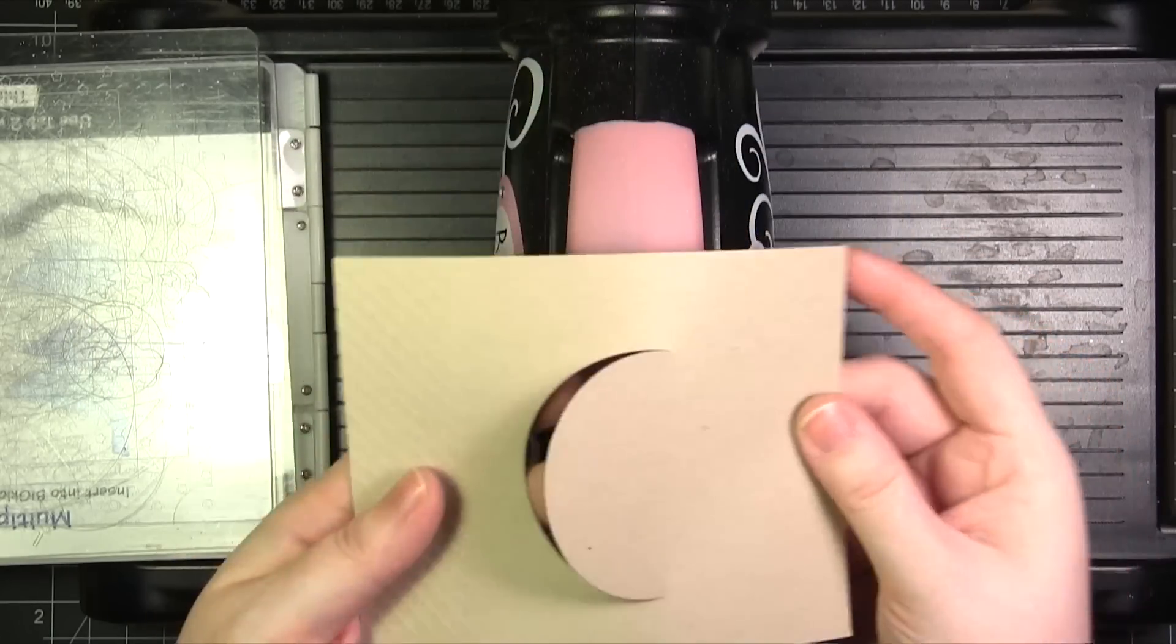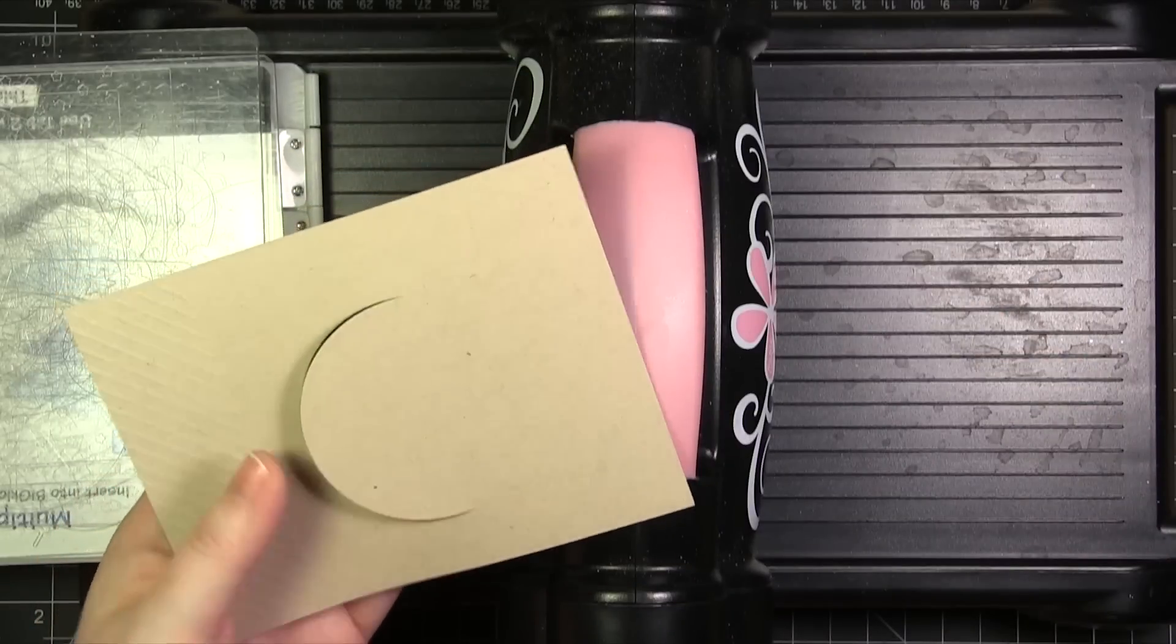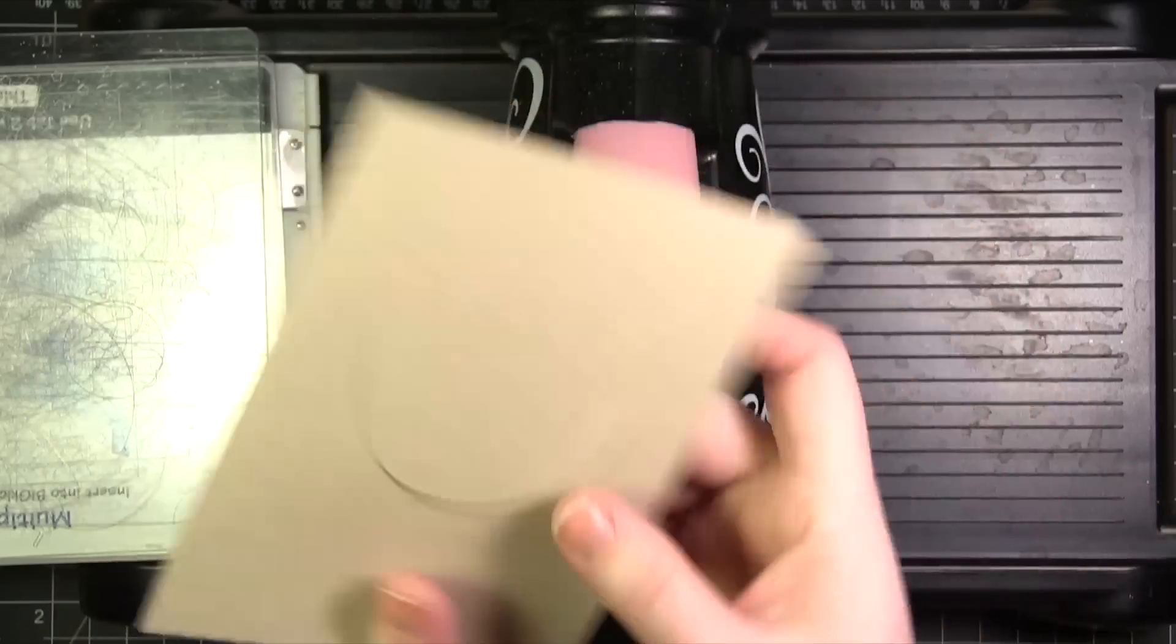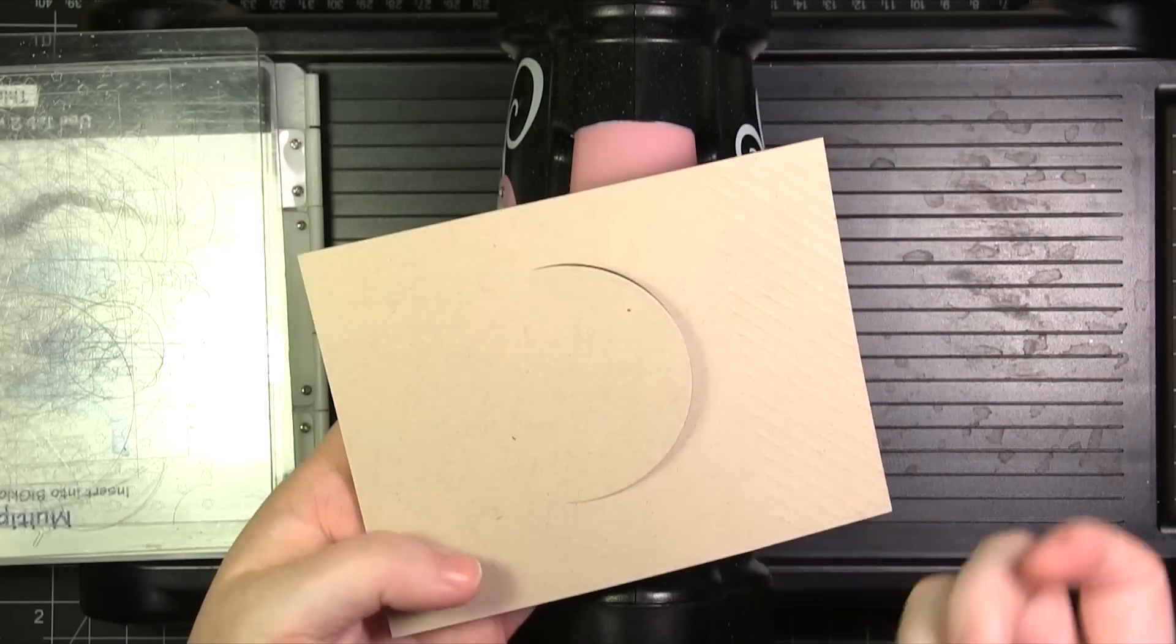This is a really fun thing to do when you need to have a slightly larger die cut. You can die cut just half, move the die cut down and turn it around and cut the other half, something like that.